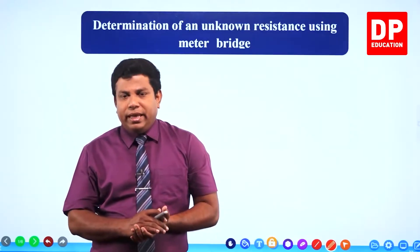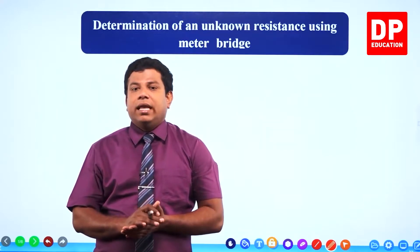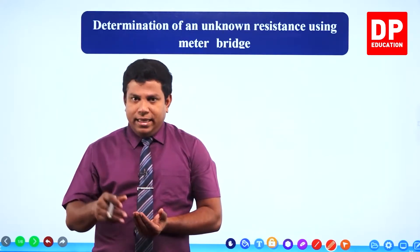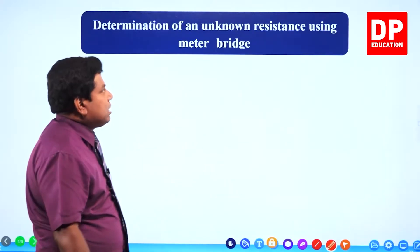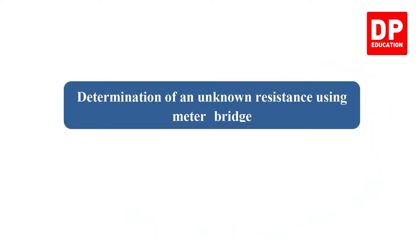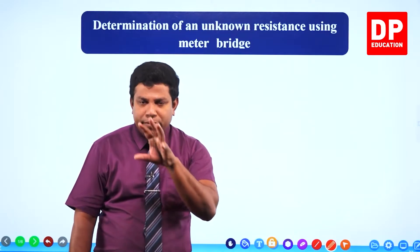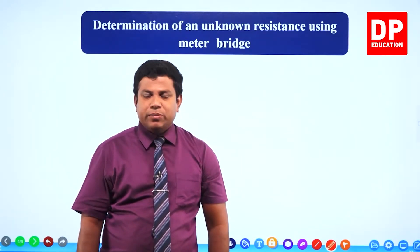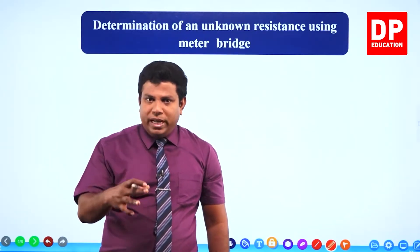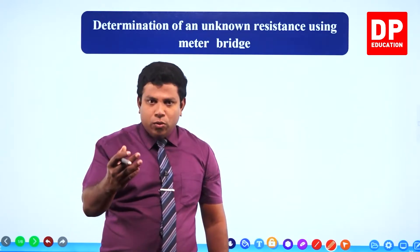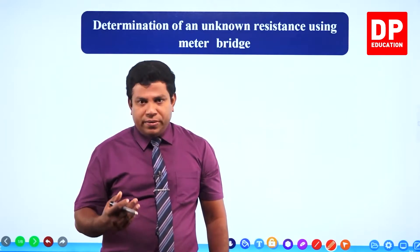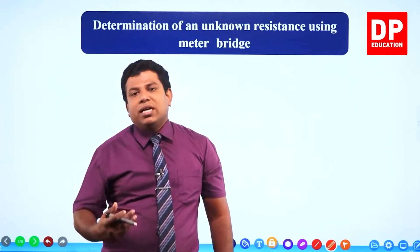Dear students, in Physics, in the section Electricity, let's see another experiment. The title of this experiment is Determination of an Unknown Resistance Using Meter Bridge. This is the first time we are going to use a Meter Bridge in our experiments. Let me first explain how the Meter Bridge works and how we use that inner circuit.